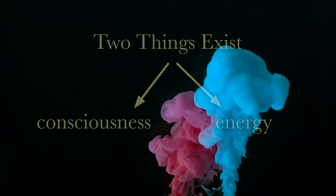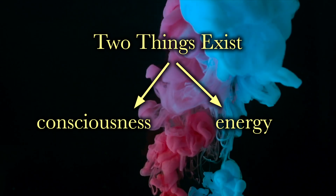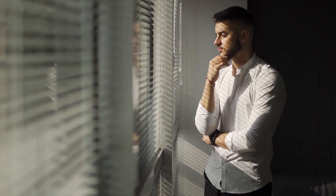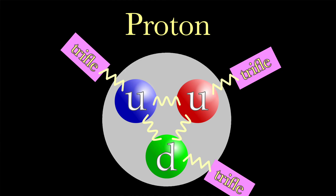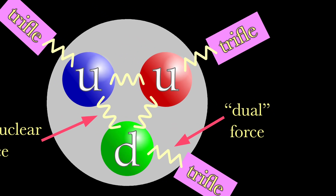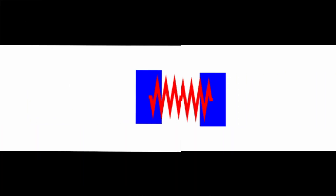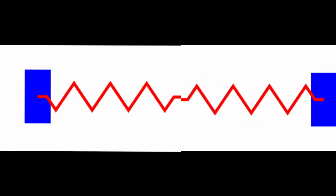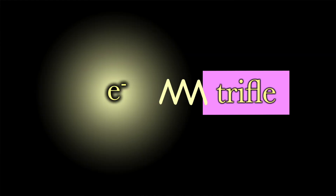Energy and consciousness are the only two fundamental elements in the universe. Their interaction has puzzled both scientists and philosophers for ages. According to this new hypothesis, each of the three quarks in a proton is linked to a trifle — a tiny fragment of your consciousness. They're connected by a dual force that maintains an optimal distance between them, allowing for a flow of information to your mind, essentially connecting the motion and status of the quarks to you. Trifles are also attached to electrons, just as they are to quarks.